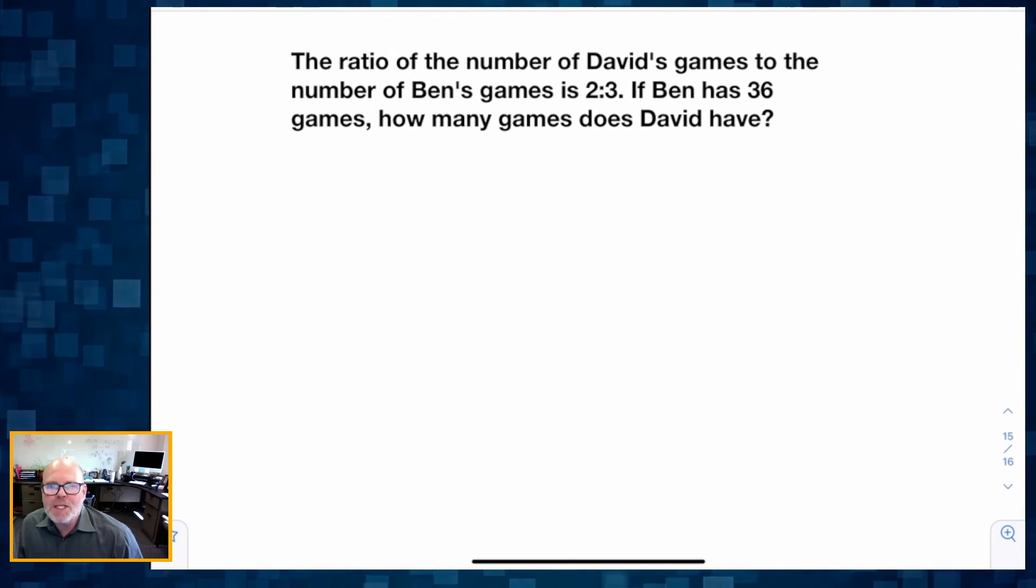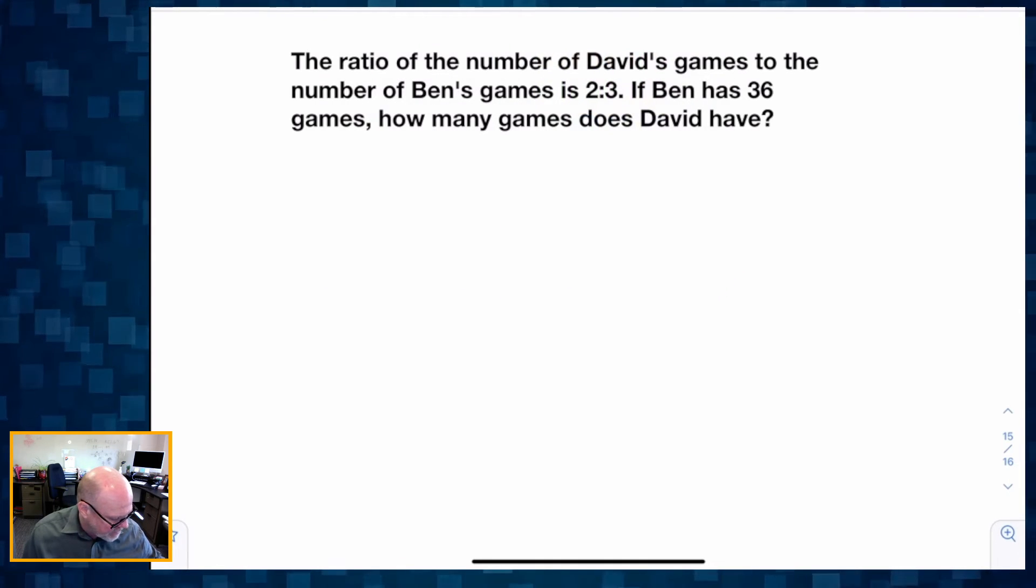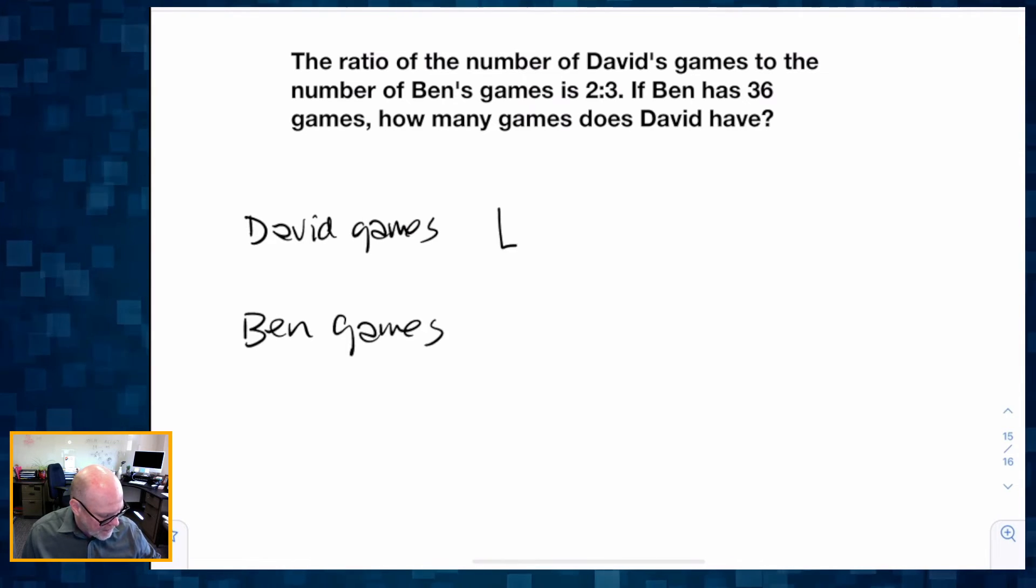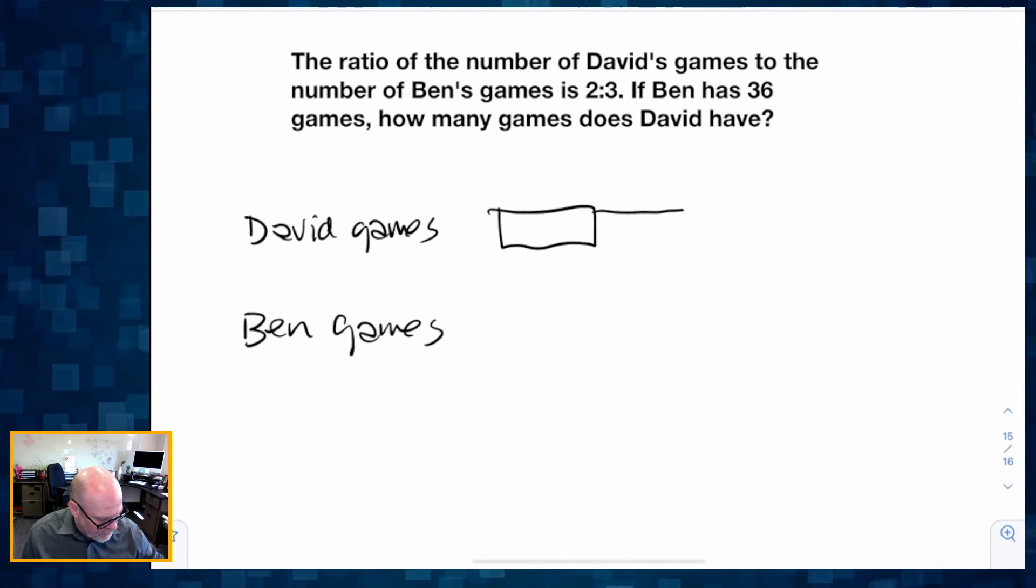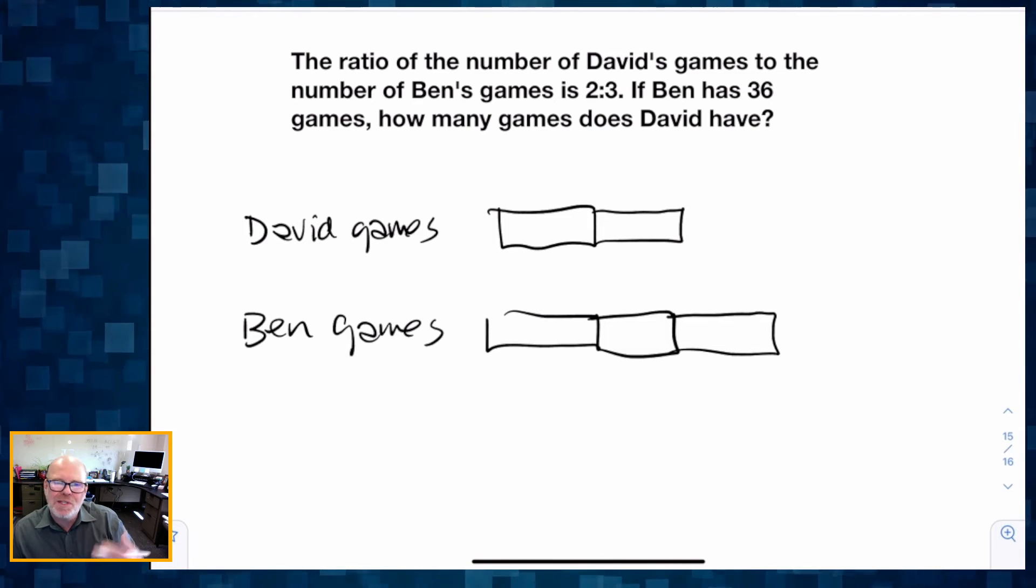It says the ratio of the number of David's games to the number of Ben's games is 2 to 3. So let's start drawing that. Let's represent David - David has some games - and Ben has some games, and we're going to represent that as a ratio of 2 to 3.